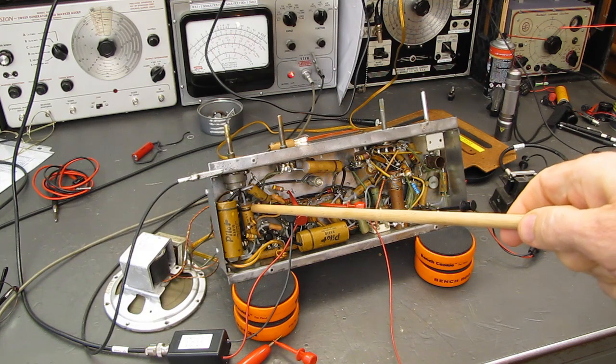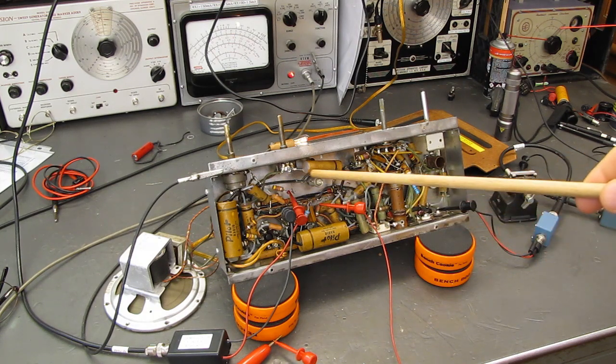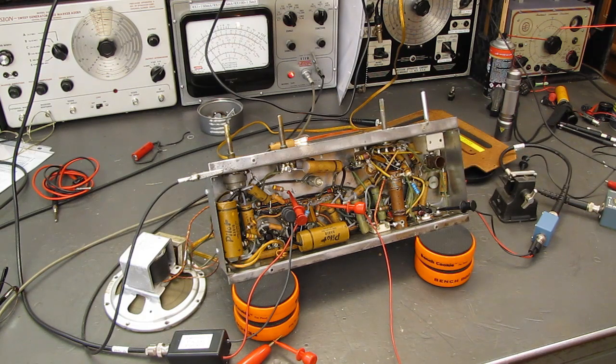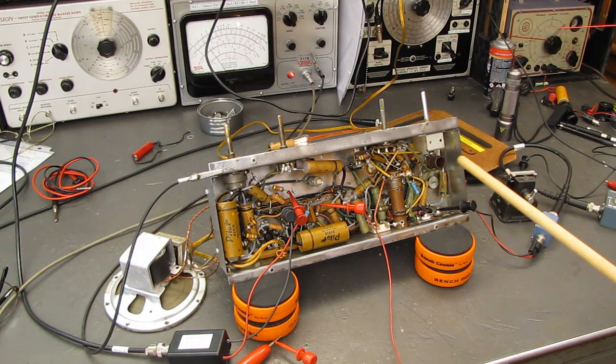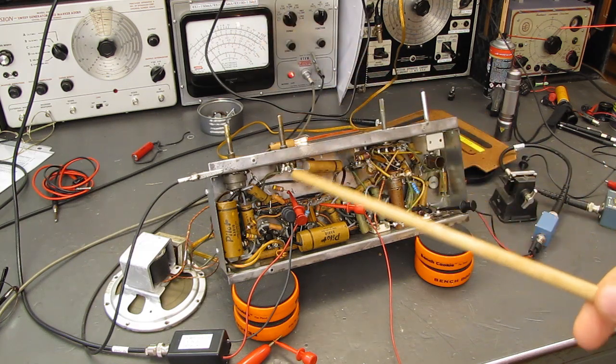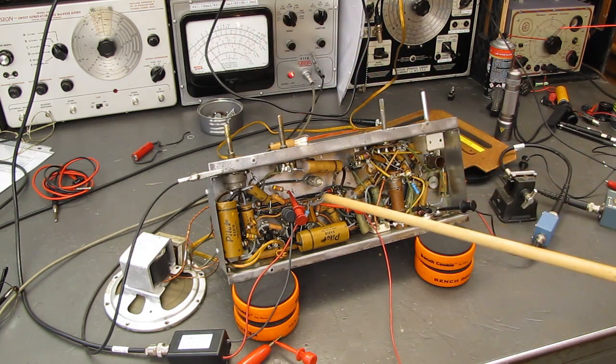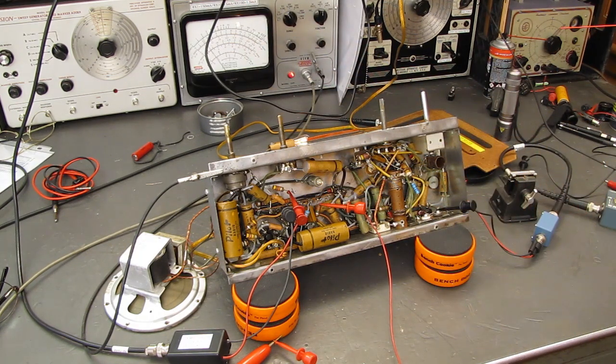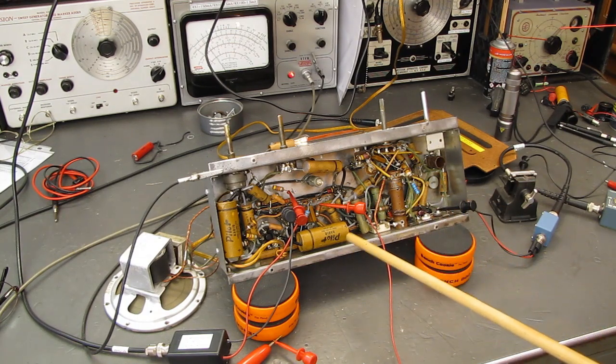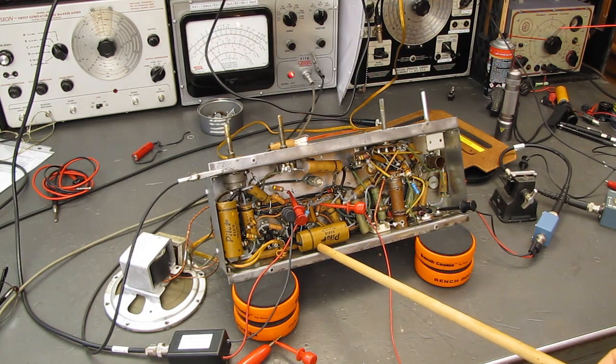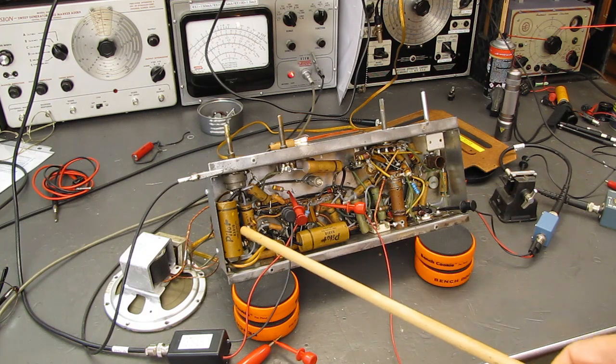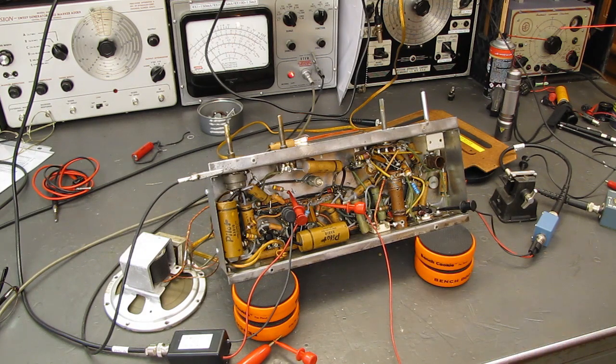A lot of these capacitors were actually Spragnes, and the Sprague orange drops are replacing the inside guts, so I felt pretty good about that. Just about every capacitor in here was seriously leaky, with two exceptions.